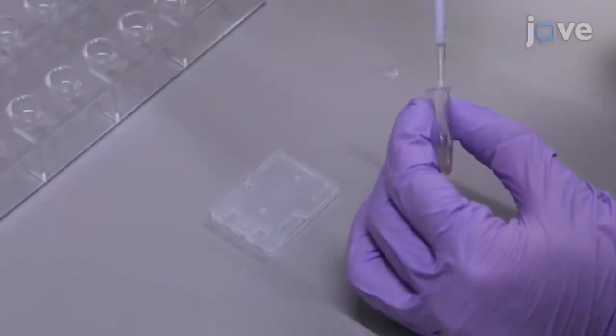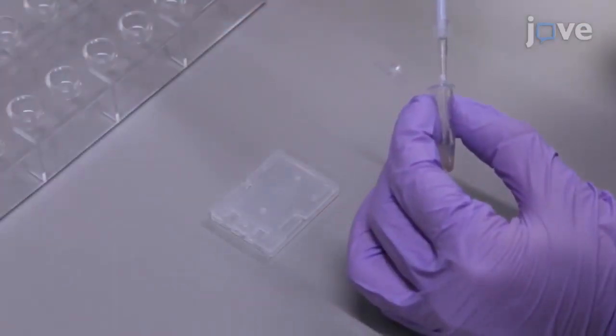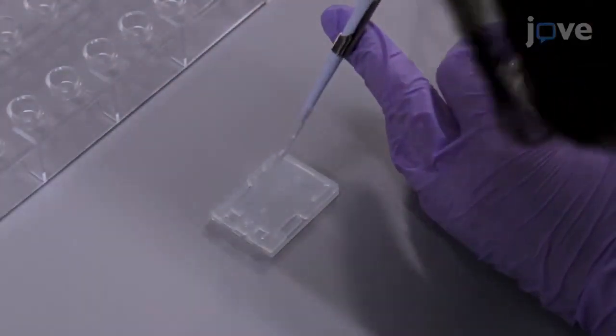Then, with a pipetman, place 10 microliters of the homogenate into the well of the cartridge of the mass spectrometer.